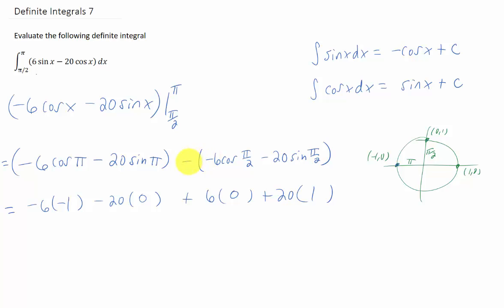You'll notice that I distributed this negative sign to make both of these terms positive as well. Simplifying just gives us the answer 26, and we are finished.